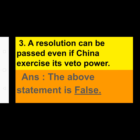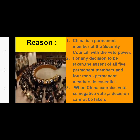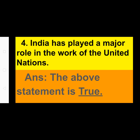Next: a resolution can be passed even if China exercises its veto power. China is one of the permanent members of the Security Council and has veto power. If China is not in agreement with any resolution, it cannot be passed. This statement is FALSE. Reason: China is a permanent member of the Security Council with veto power. For any decision to be taken, the assent of all five permanent members and four non-permanent members is essential. When China exercises negative veto, a decision cannot be taken.